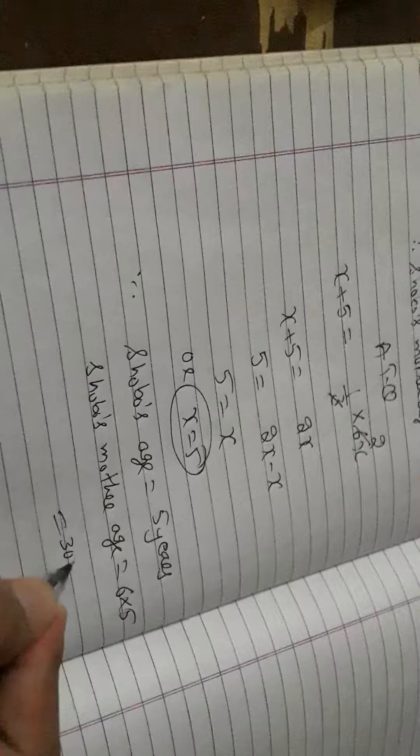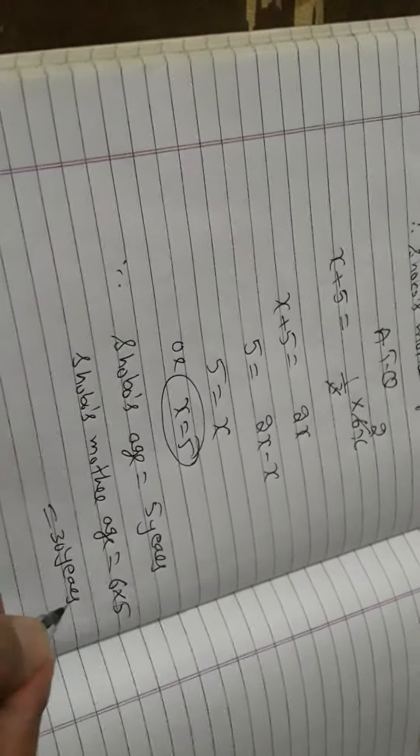Shubo's mother's age is 6 into 5, which is 30 years old. This completes the 5th sum from exercise 2.4. Thank you.